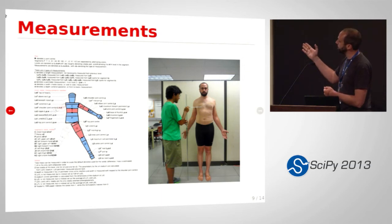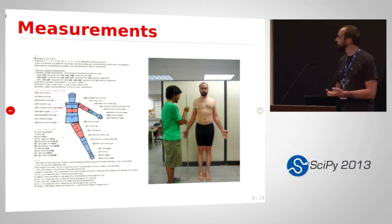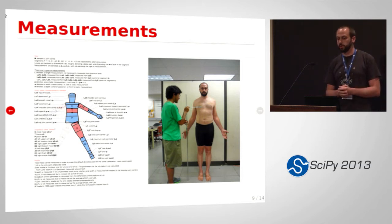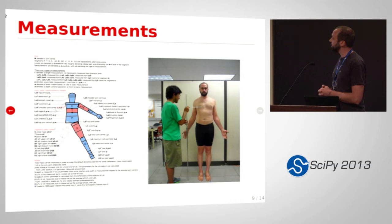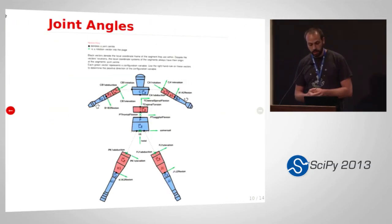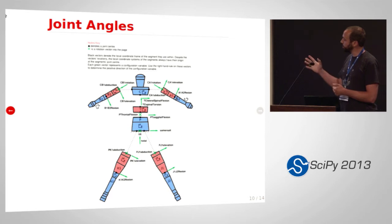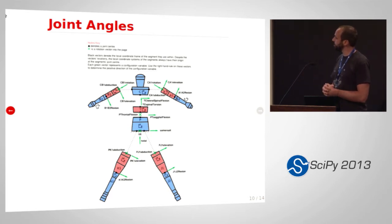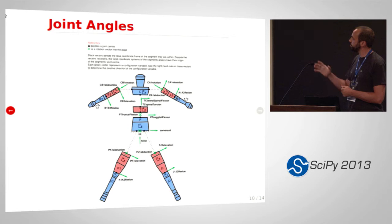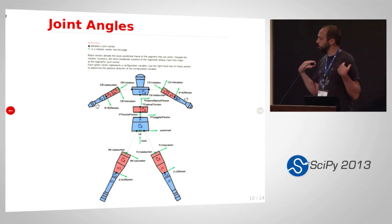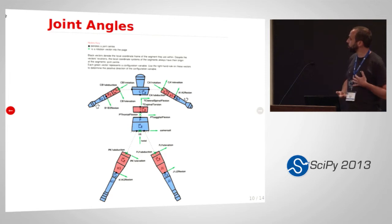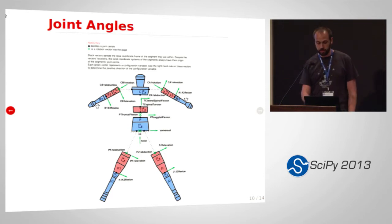The method takes 95 measurements. Once you get it down pat, you can do it in 30 minutes for each subject. The model can have many joint angles, but the default joint angles for Yeadon's model are at the elbow, shoulders, a couple in the torso, the hips and the knees, all defined with rotational vectors.